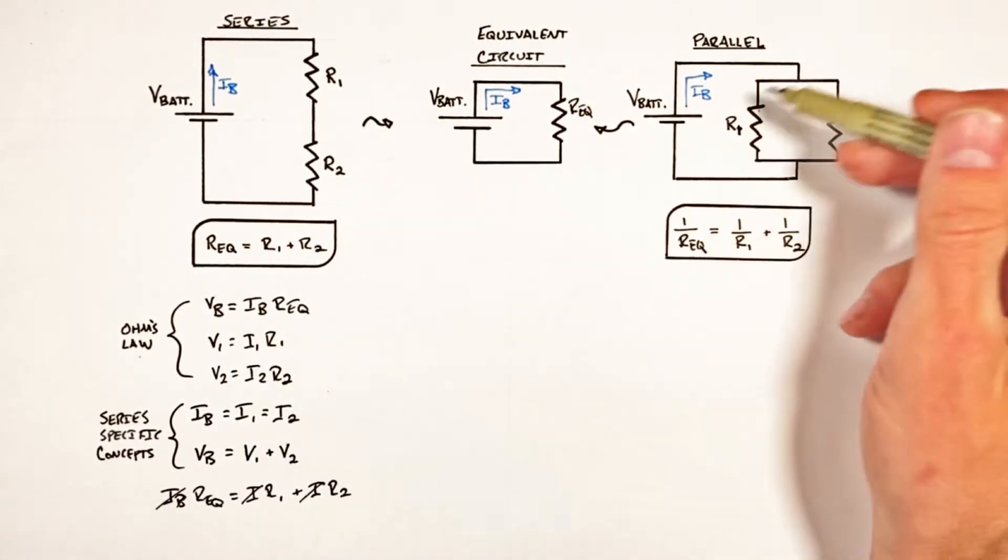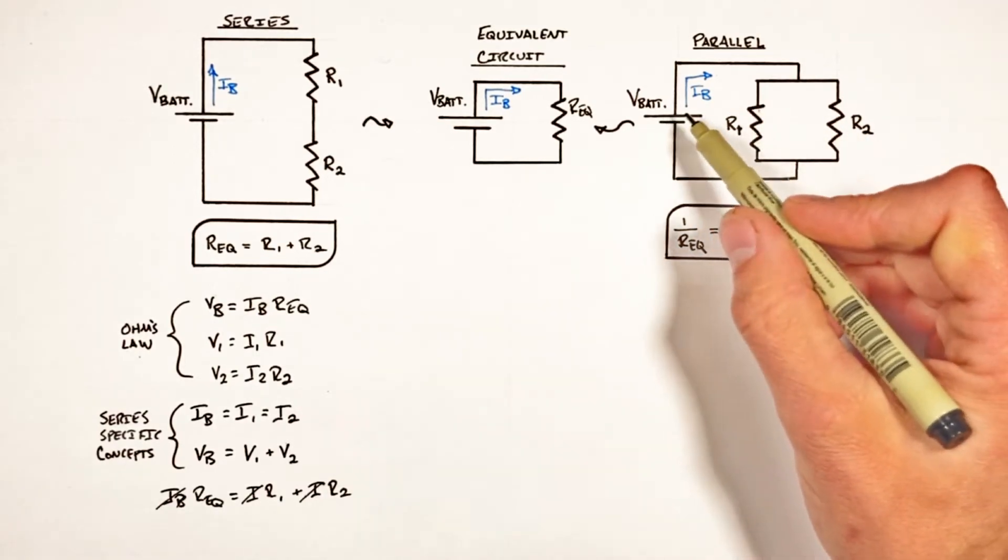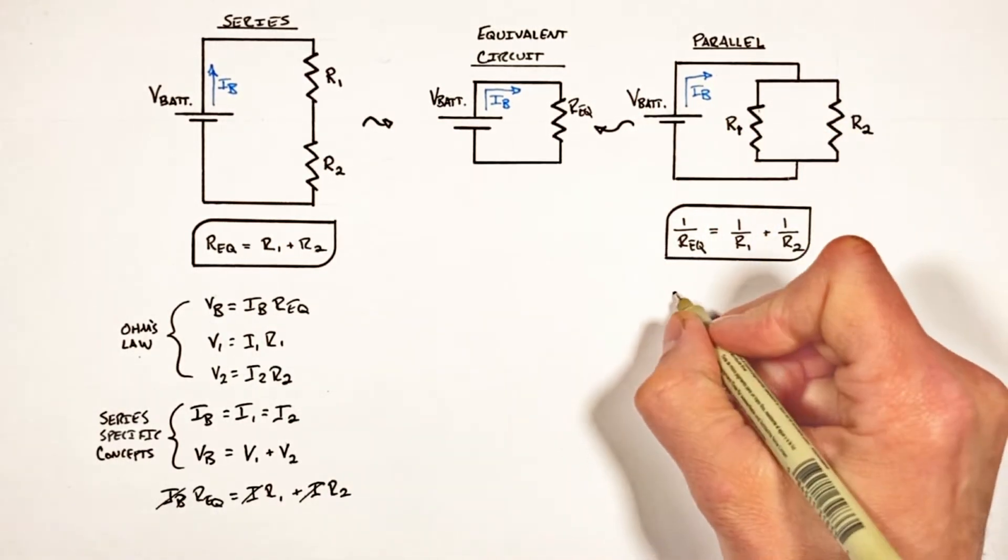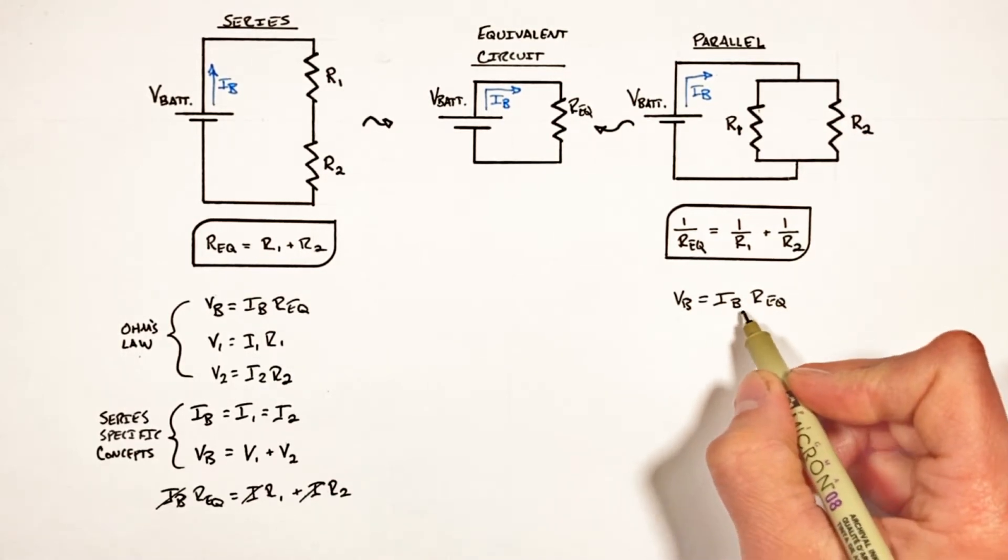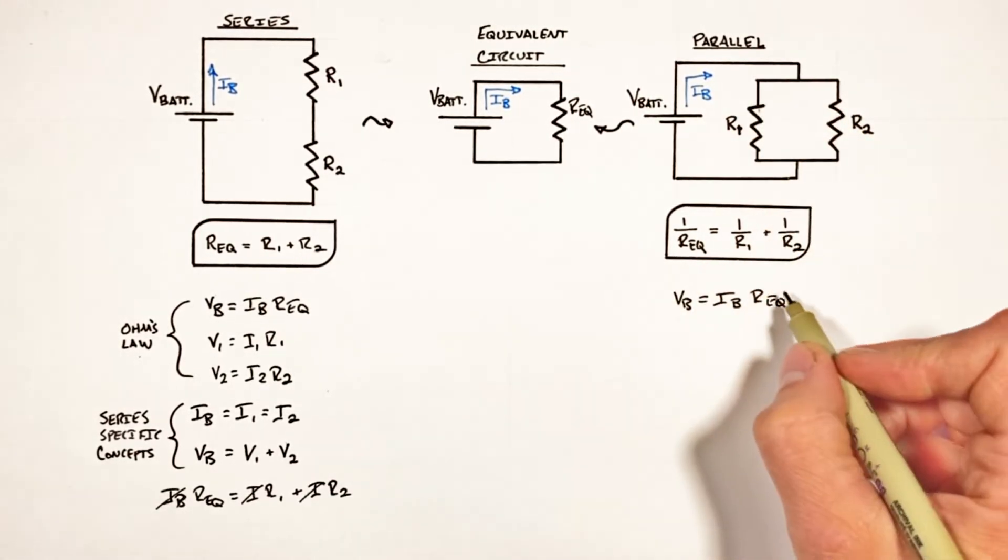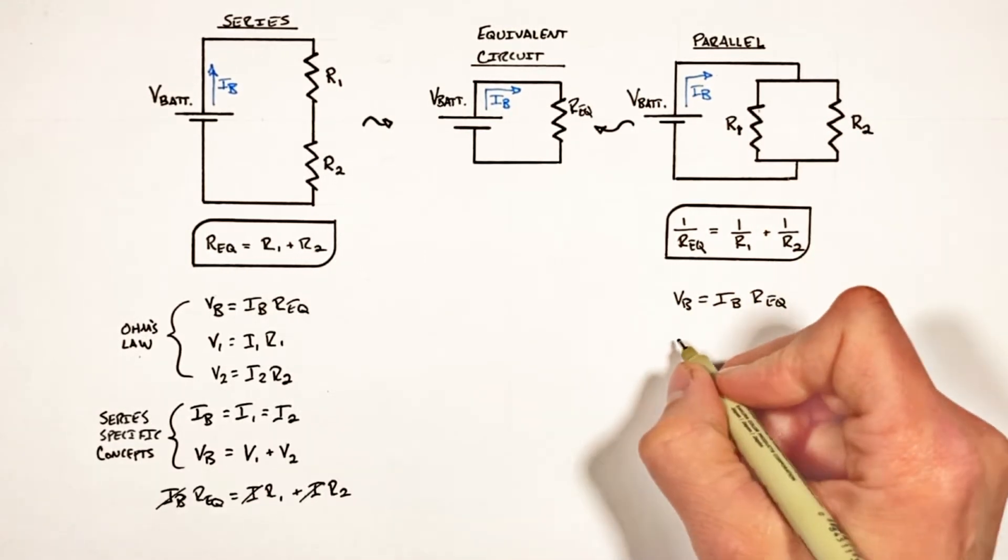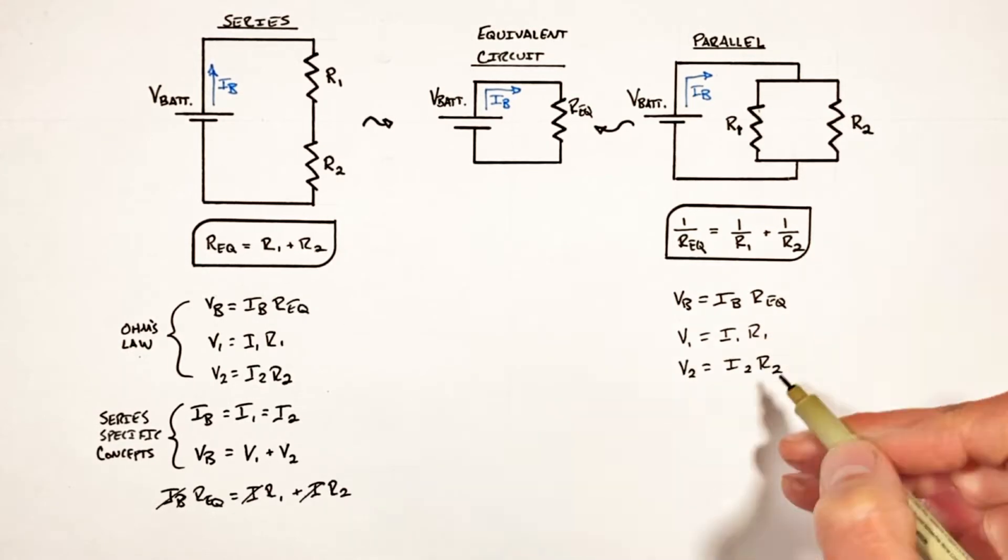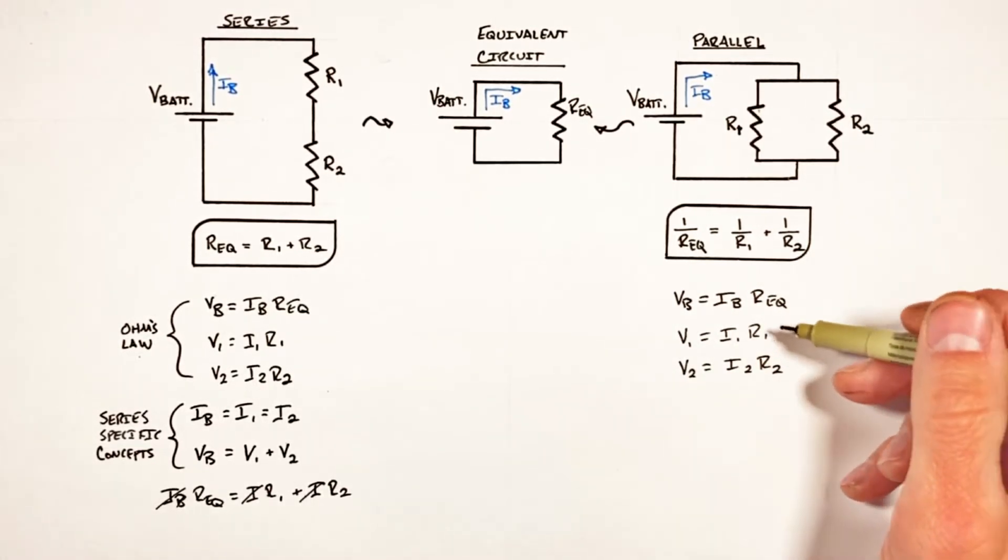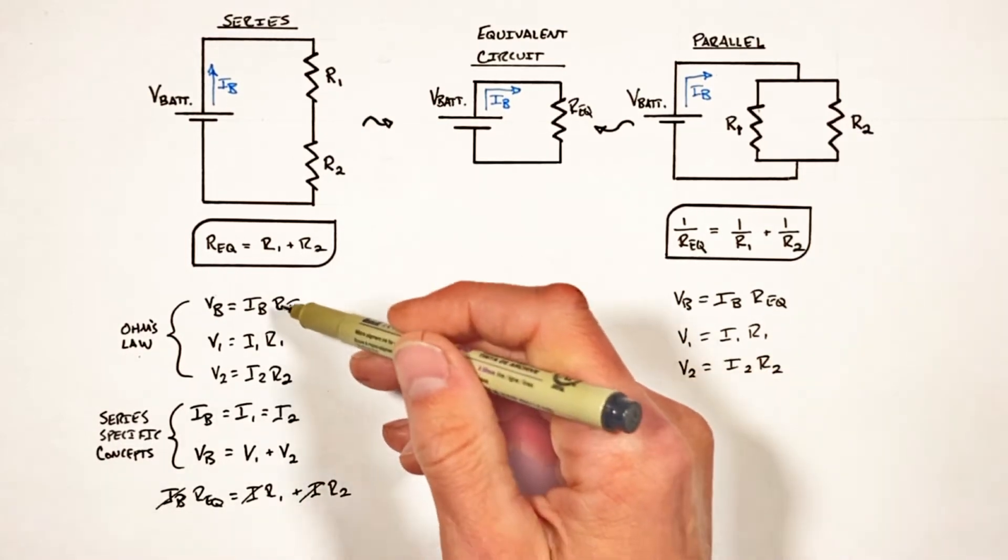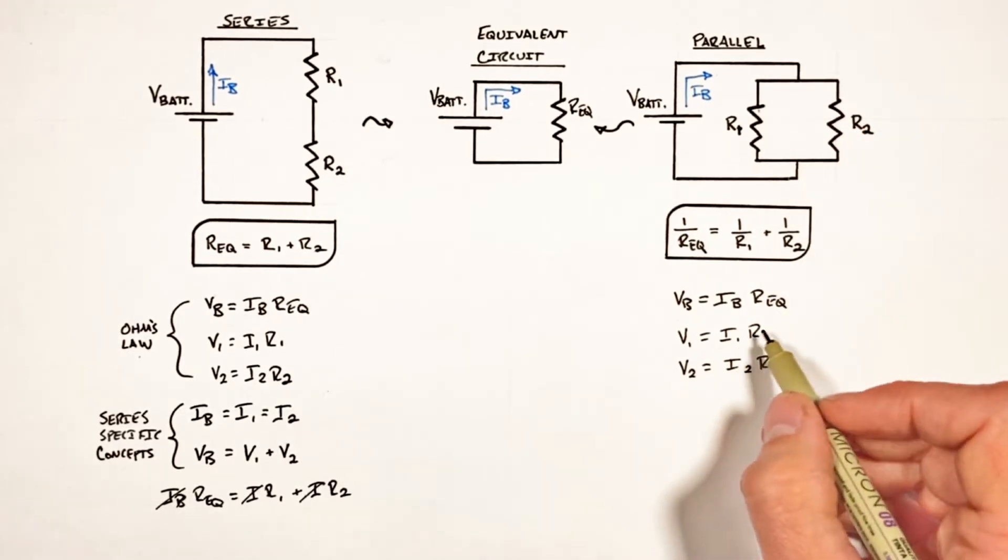And we can perform a similar analysis over here with our resistors in parallel. First we're going to apply Ohm's law to each component within the circuit, where the voltage of the battery is going to be equal to the current coming out of the battery multiplied by the equivalent resistance. Then looking at each individual resistor, and you'll notice these three equations are just applications of Ohm's law, so they look absolutely identical to what we came up with over here when we were talking about resistors in series.